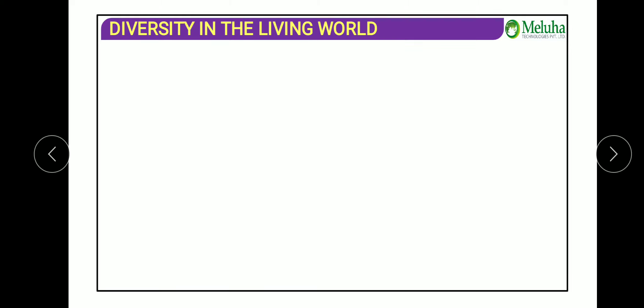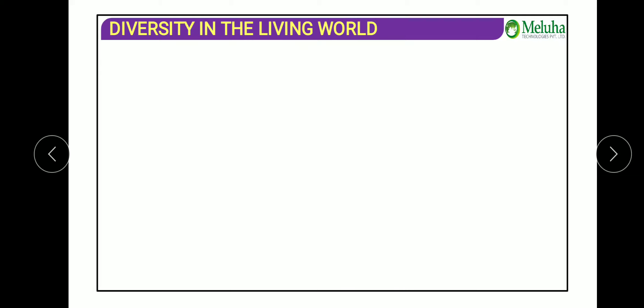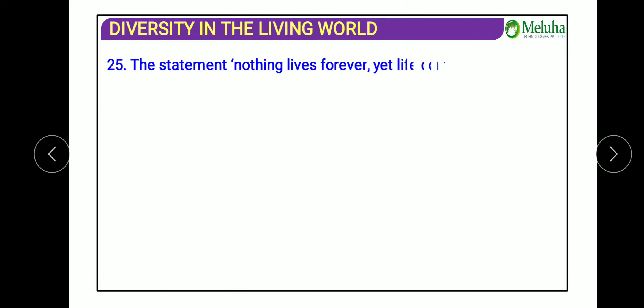The next question: the Indian Botanical Garden is located at which place? The options are Lucknow, Howrah, Kew, and Bangalore. Kew Gardens is in London. The Indian Botanical Garden is located in Howrah, West Bengal. Lucknow has the National Botanical Research Institute.